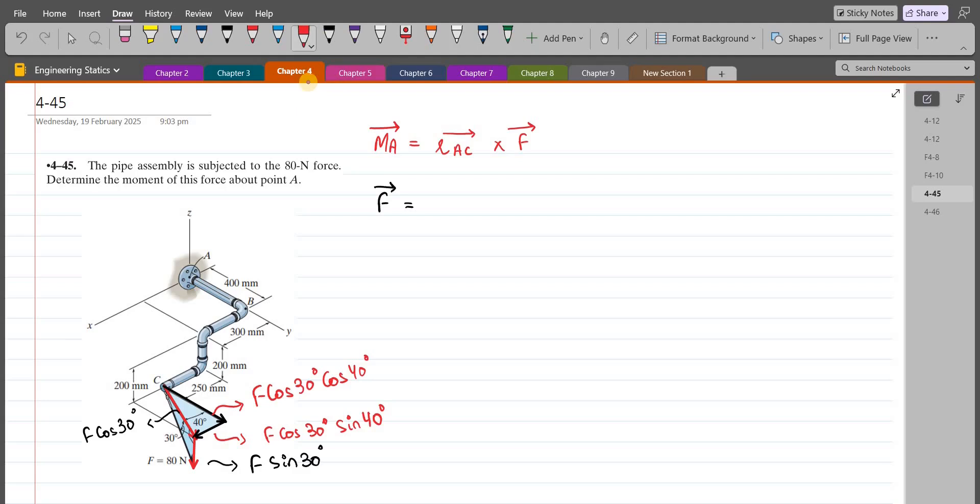So our force F in terms of Cartesian vector form becomes F cos 30 sin 40 i, and F is 80 Newtons, so 80 cos 30 sin 40 i, plus F cos 30 cos 40, so 80 cos 30 cos 40 j, minus F sin 30, so 80 sin 30 k.